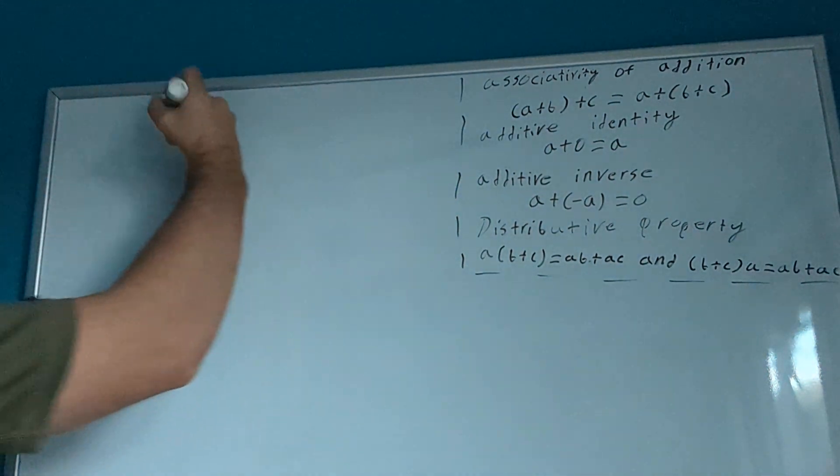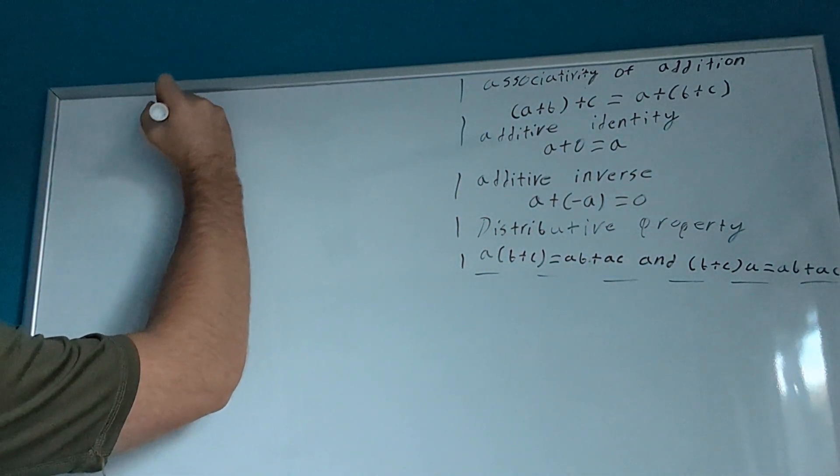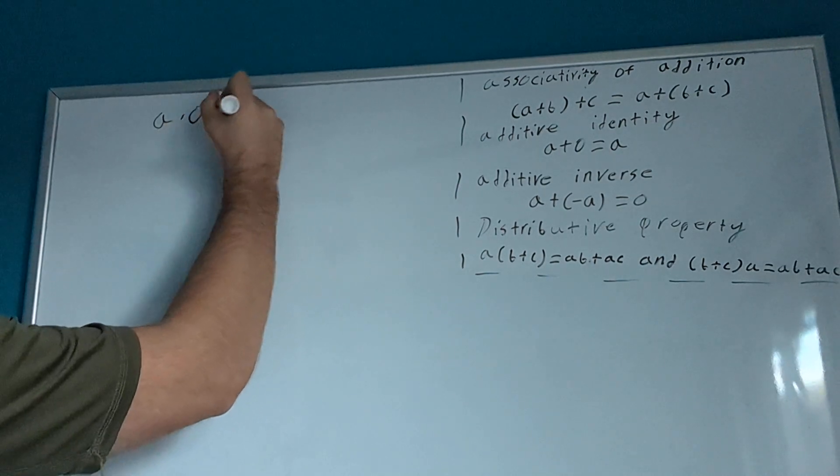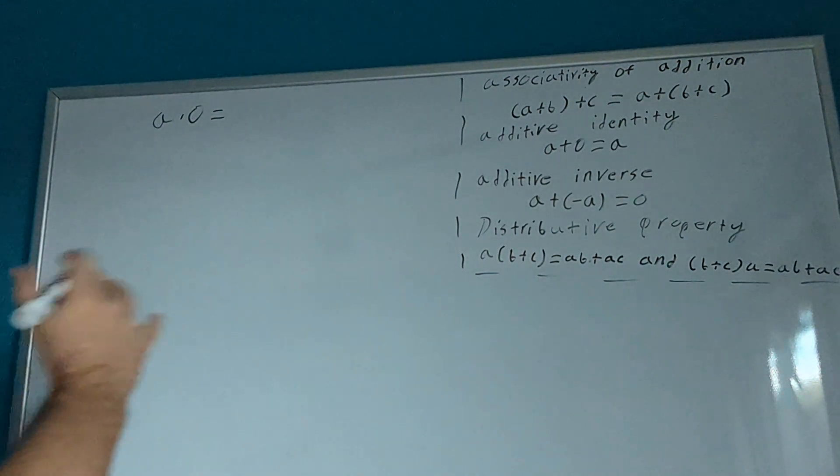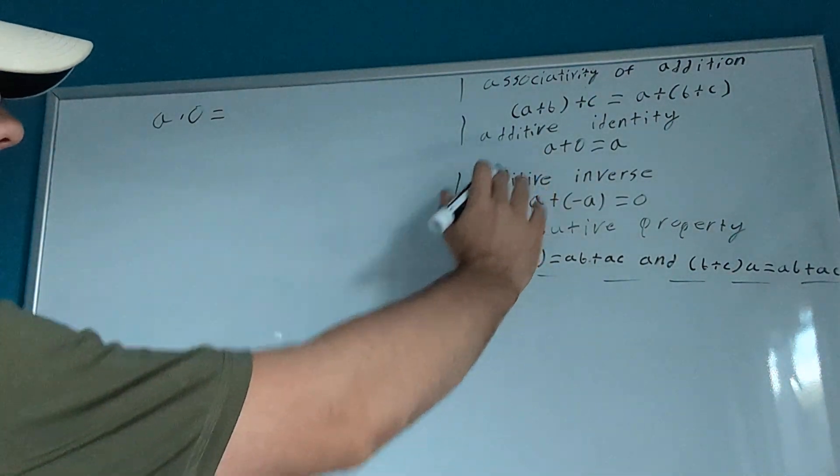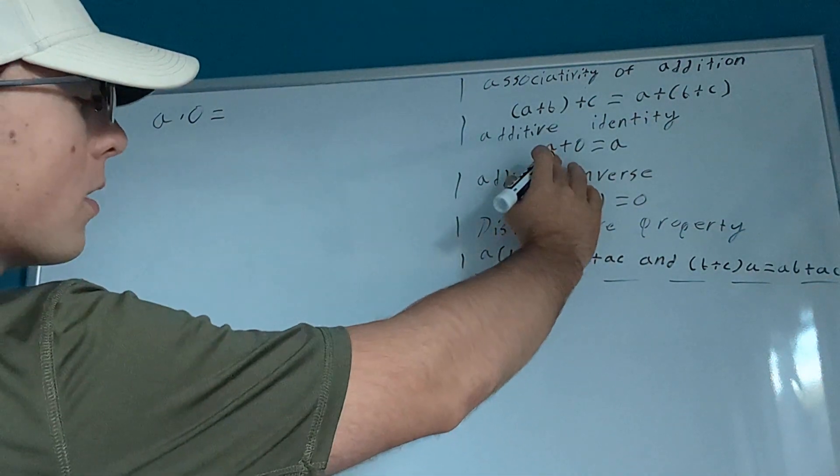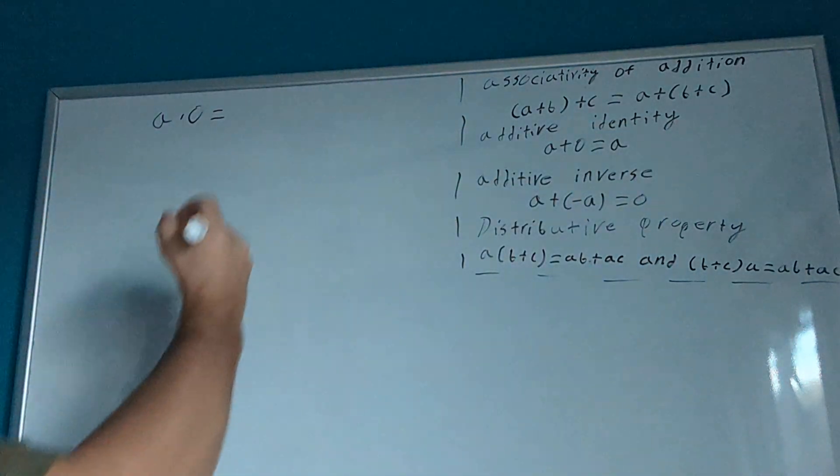So, let's begin with stating a times 0, where a is any number, and then what we're going to do is we're going to use the additive identity, where a number plus 0 equals that same number.